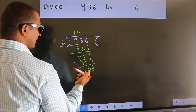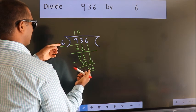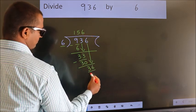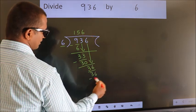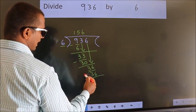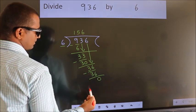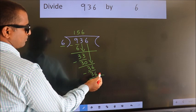When do we get 36 in 6 table? 6 times 6 is 36. Now, we subtract. We get 0. No more numbers to bring it down.